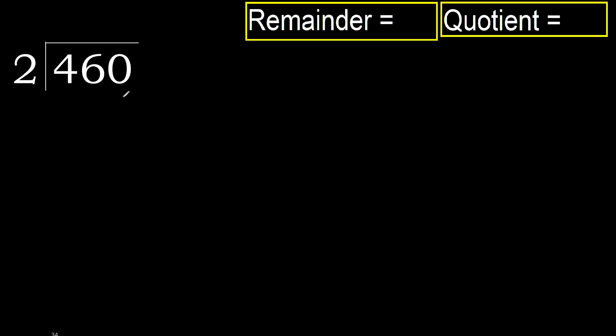460 divided by 2. 4 is not less, therefore start with 4. 2 multiplied by which number is nearest to 4 but not greater? 2 multiplied by 4 is 8,